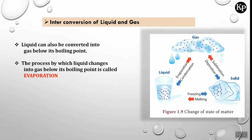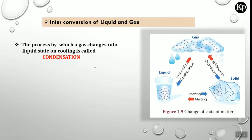Liquid can also be converted into gas below its boiling point. The process by which liquid changes into gas below its boiling point is called evaporation. The process by which gas changes into the liquid state by cooling is called condensation.